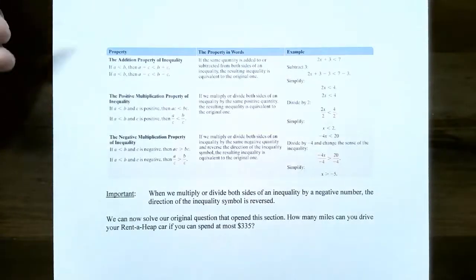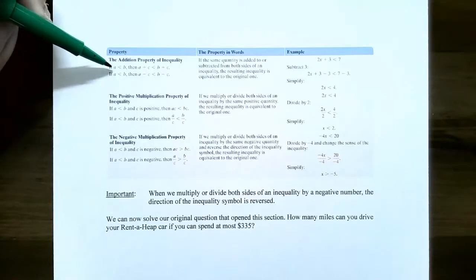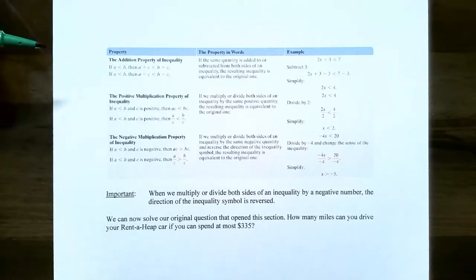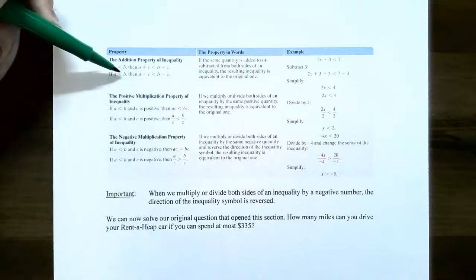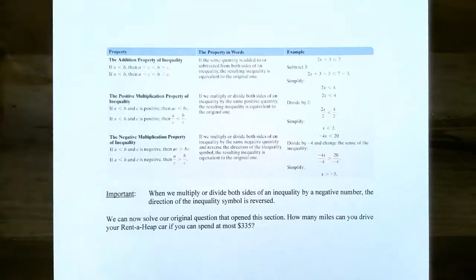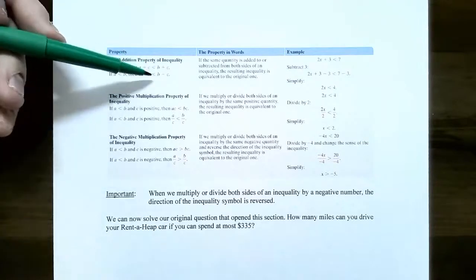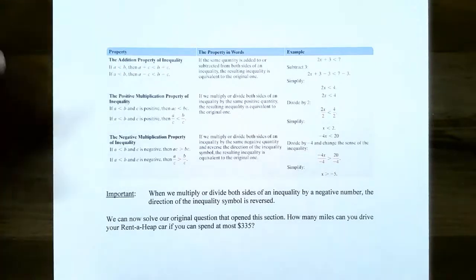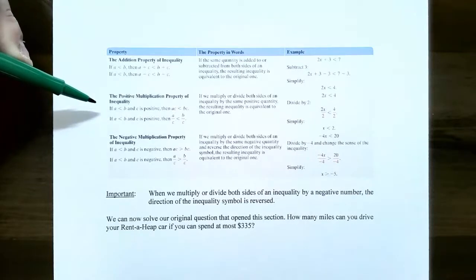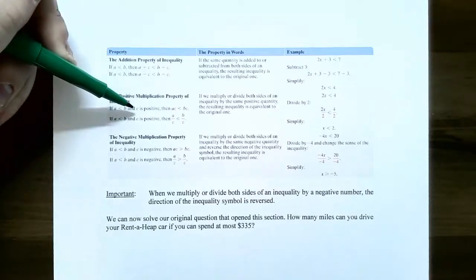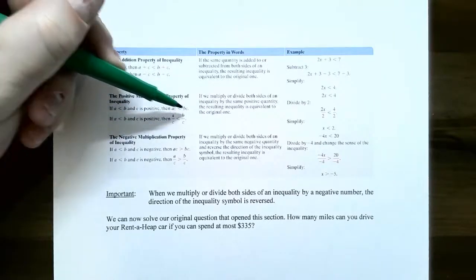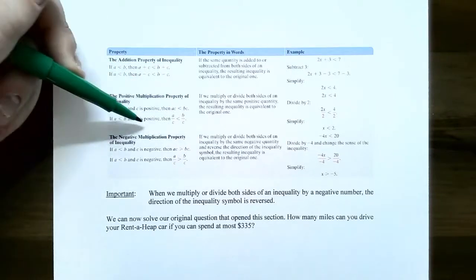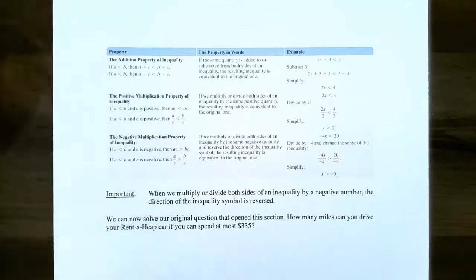These are the steps that produce equivalent inequalities. The addition property: if a < b, you can add or subtract the same constant on both sides of the inequality and it's still true — the inequality symbol stays the same direction. You're also allowed to multiply or divide by a positive number: if a < b and c is positive, multiplying or dividing both sides by c keeps the inequality the same direction.